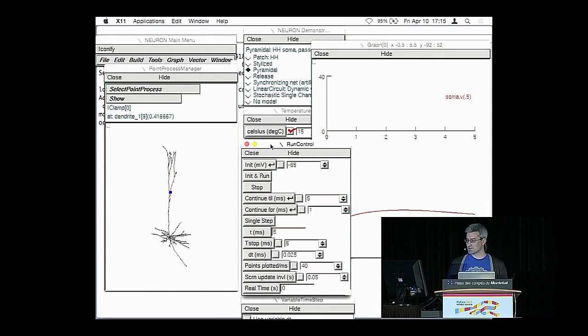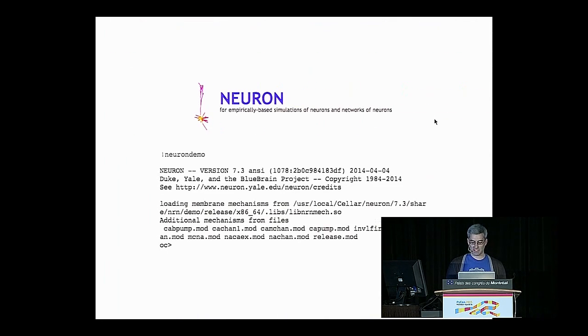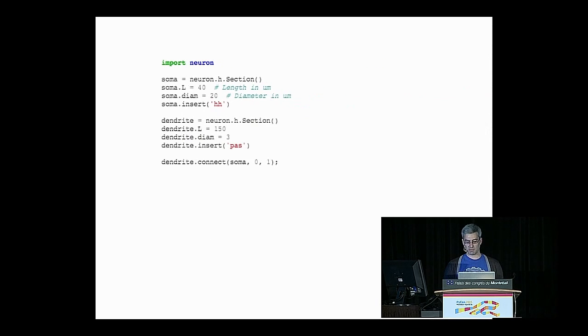So as you can see, there's lots of things that we could do in this simulation, lots of variables we could play around with. And so I'm going to play around with those a little bit in Python, using the Python bindings of neuron.